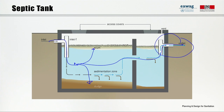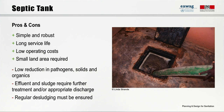One or two separation walls in the tank can improve the solid-liquid separation process. The good thing about septic tanks is that they are passive and do not require electrical energy to function, making this technology quite robust. Construction is relatively costly, but the technology has a long service life and requires little maintenance. On the negative side, the removal of pathogenic organisms, suspended matter, organic substances and nutrients is relatively low. Therefore, the effluent as well as the sludge require further treatment and appropriate discharge.